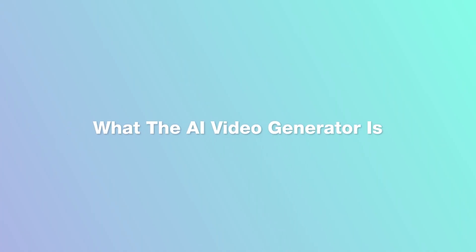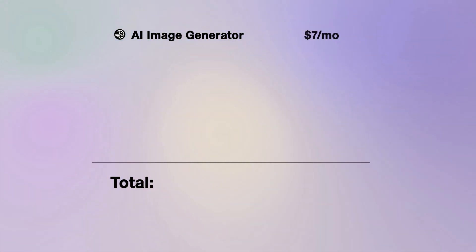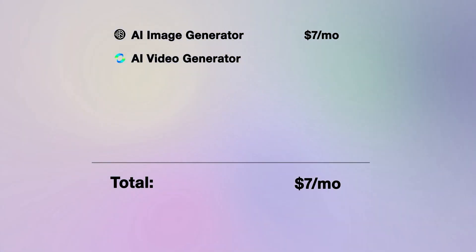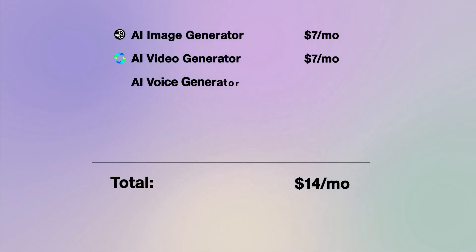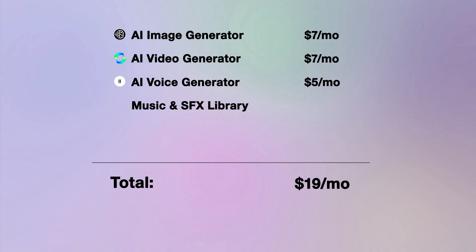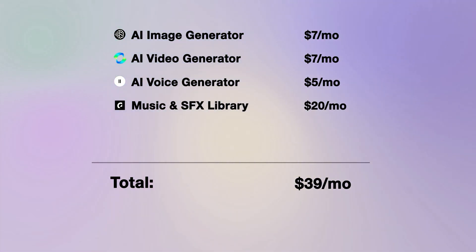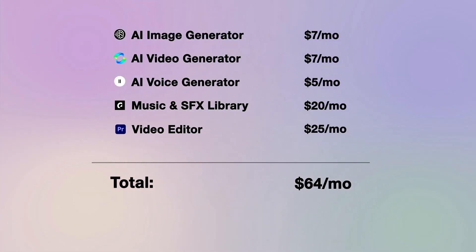To make your own AI generated short film like the one you saw, you'd usually need to use multiple tools. You'd need an AI image generator like Ideogram, which starts at $7 a month. You'd need an AI video generator like Kling, which also starts at $7 a month. You'd need an AI voice generator like Eleven Labs, which starts at $5 a month. A music and sound effects library like Epidemic Sounds, which is $20 a month. And finally a video editor like Adobe Premiere, which is $25 a month.